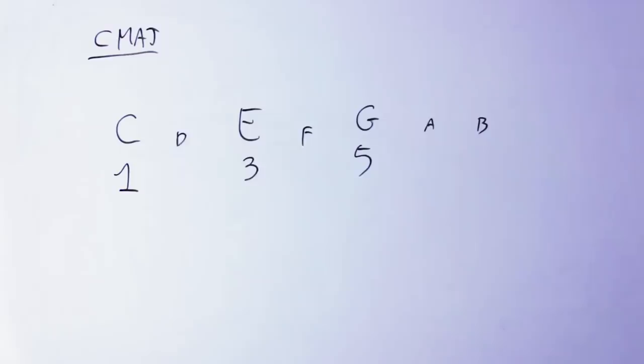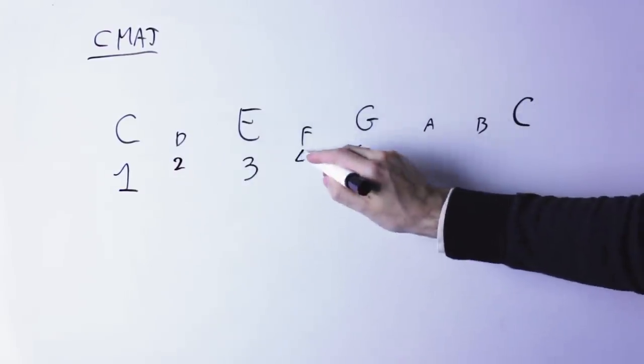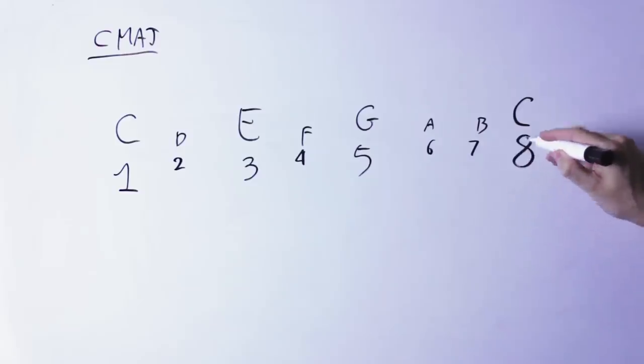C, D, E, F, G, A, B, the root is the first note, the third is the third note of the scale, and the fifth is the fifth note of the scale. So far, so good.